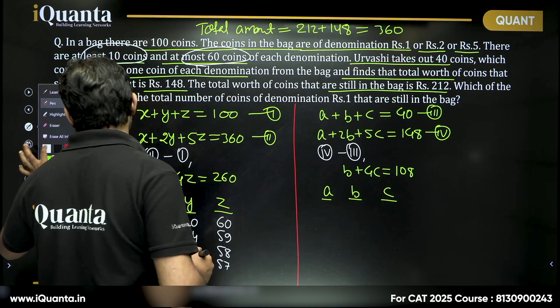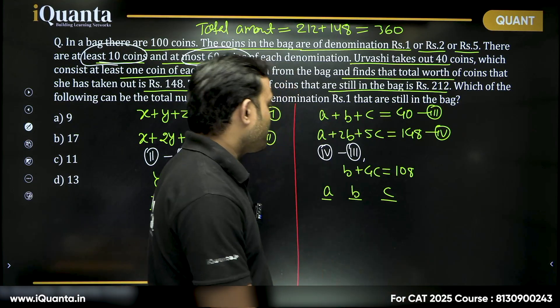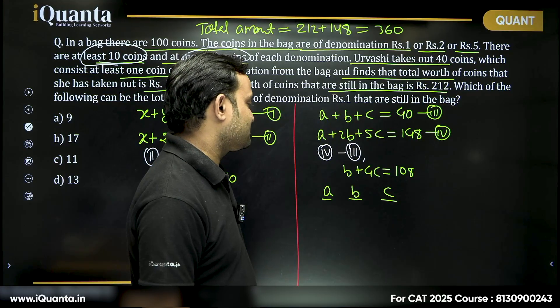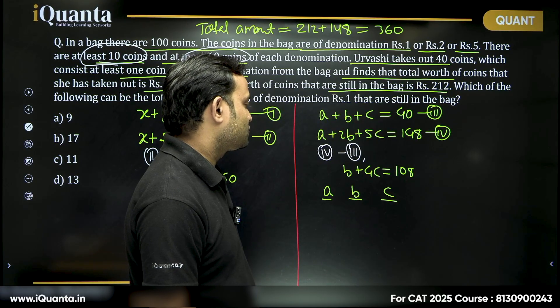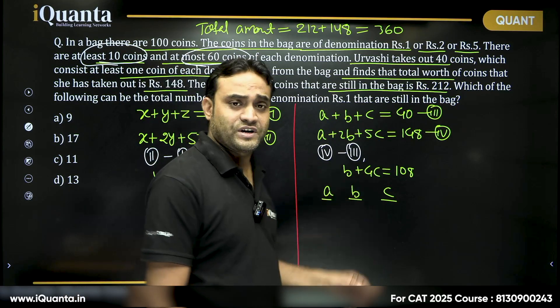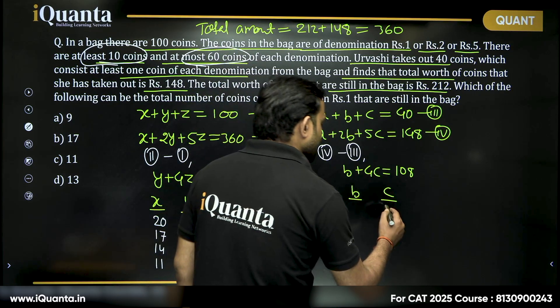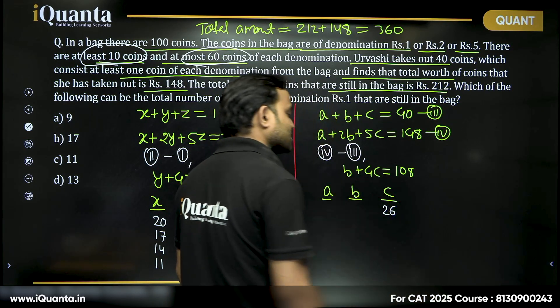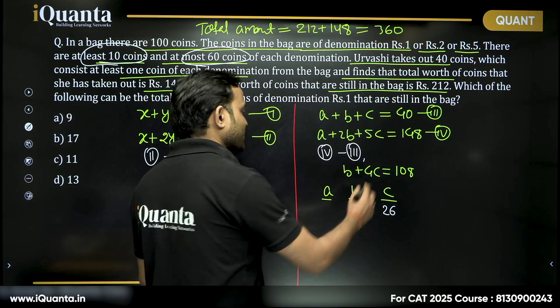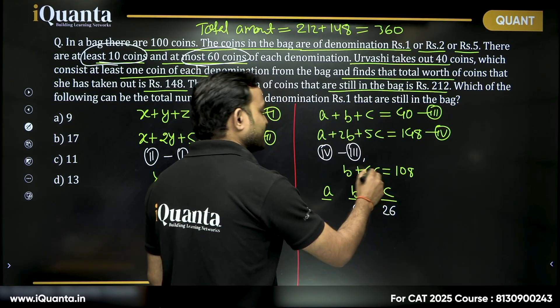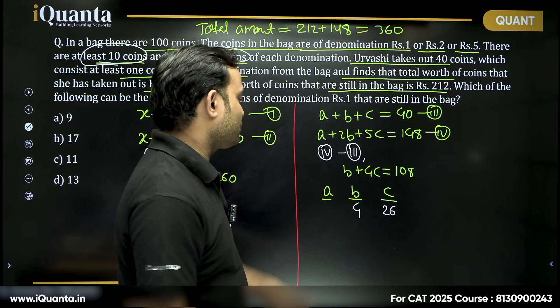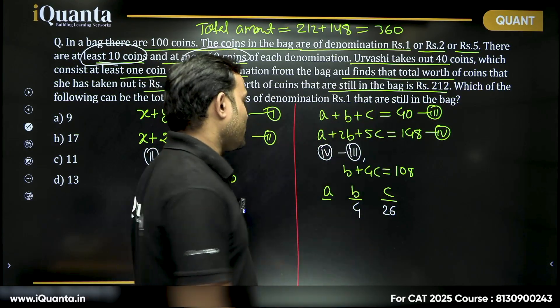Maximum value of c I can take is 27 but if I am taking c as 27, b will become 0. So that is not possible. I must take c at max 26, then b will become 4. 26 into 4, 104, b is 4. Total is 40, so a must be 10.